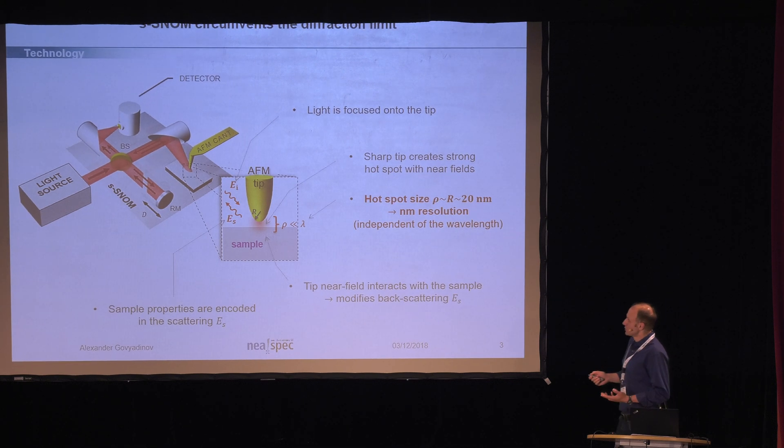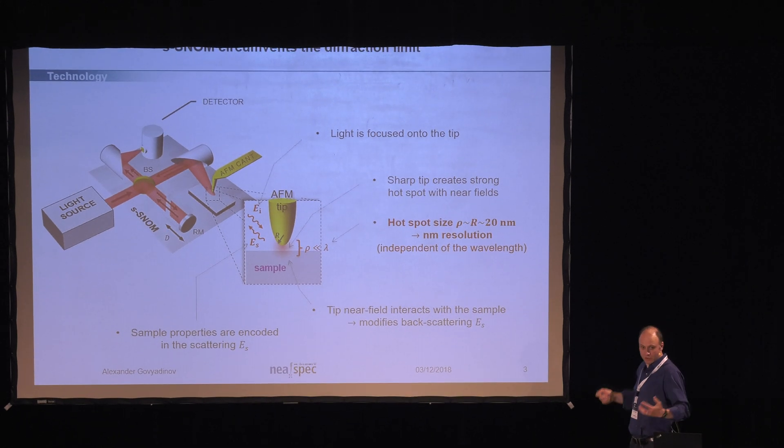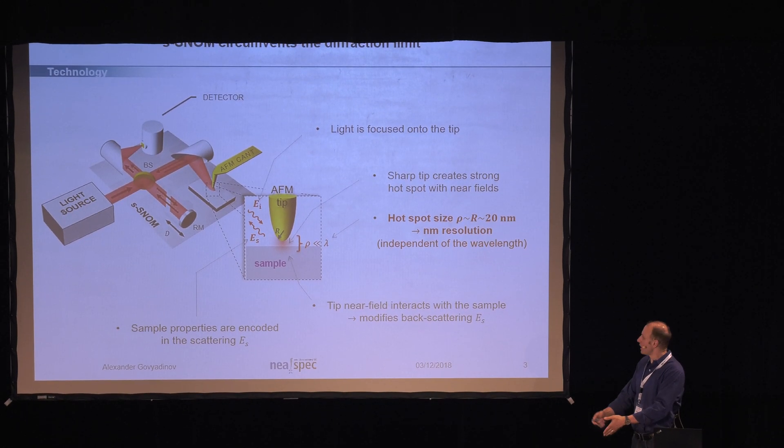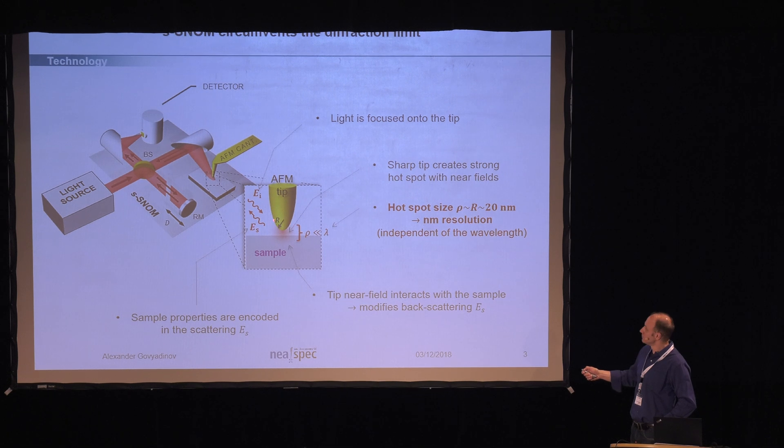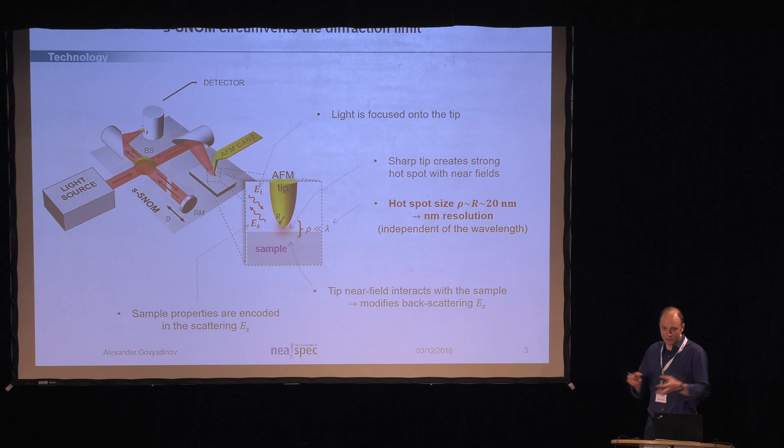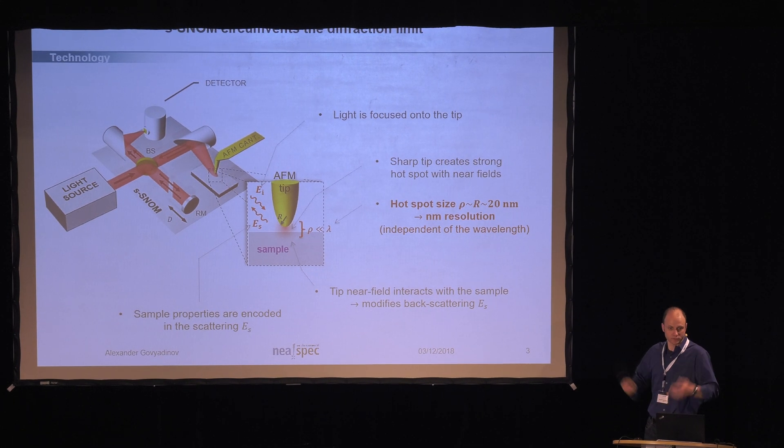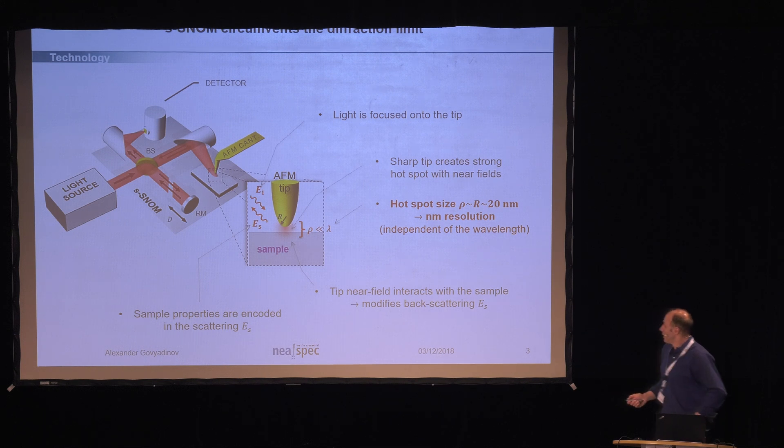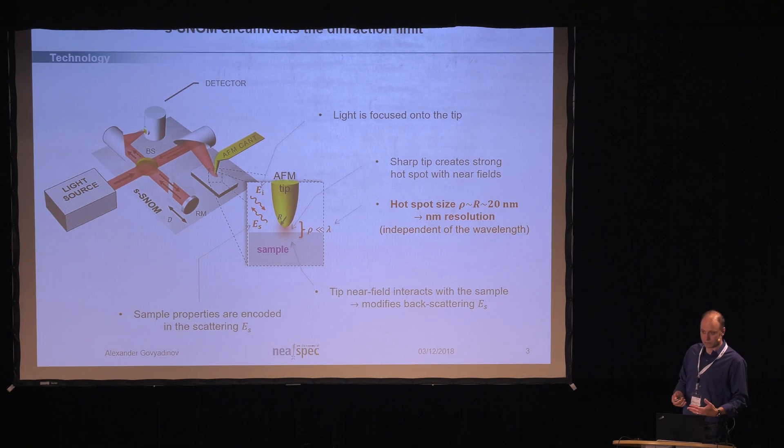The AFM and the sample is located in one of the sample arms. That's an important feature, as we'll see later, so that allows actually the detection of the amplitude and phase signals at once, not just magnitude or intensity. Now, the basic principle. So what happens with this light, why do we have the resolution? The reason for that is because the light, which is focused by the parabolic mirror onto the tip, is captured by the tip and focused down to the tip apex, creating a hot spot.